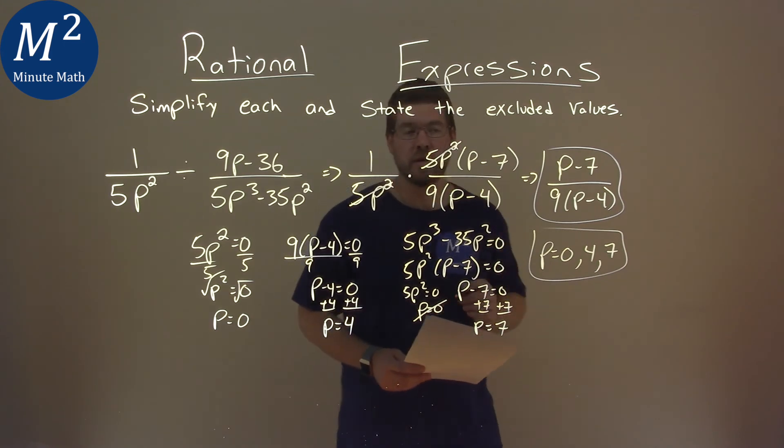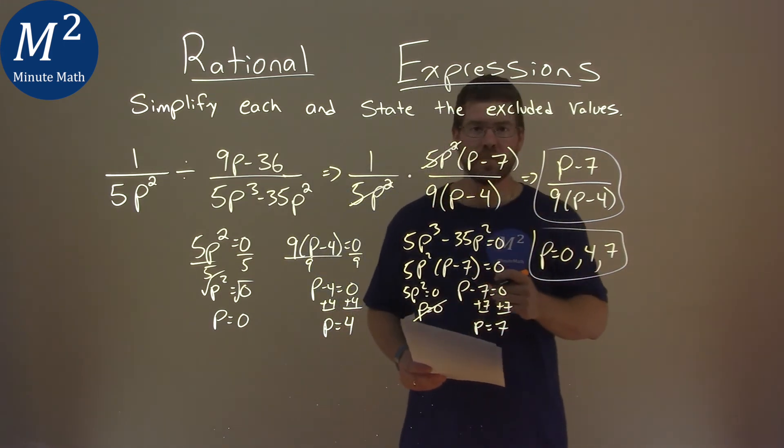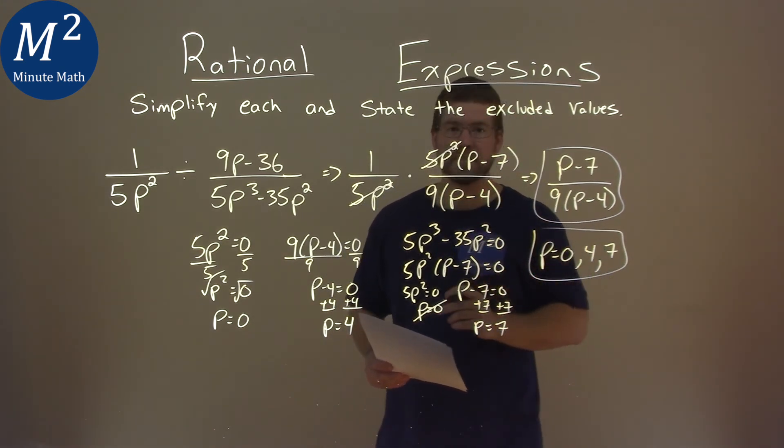And so my final answer here, simplified is p minus 7 over 9 times p minus 4, and the excluded values are p equals 0, 4, and 7.